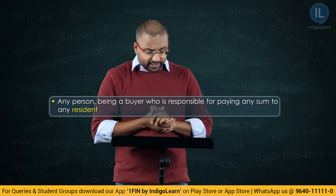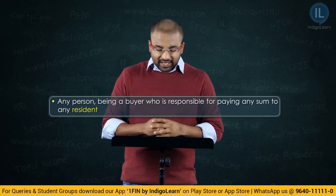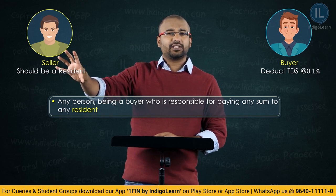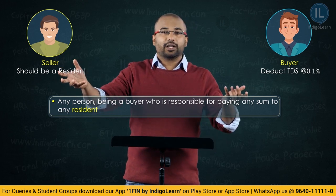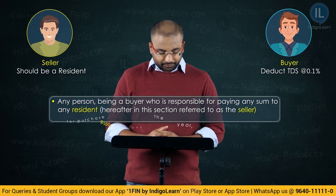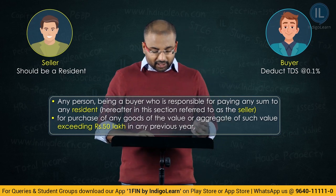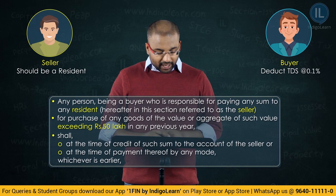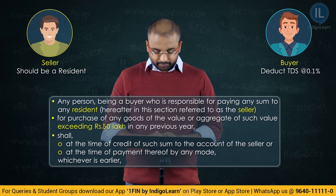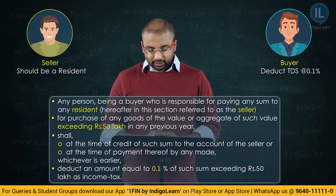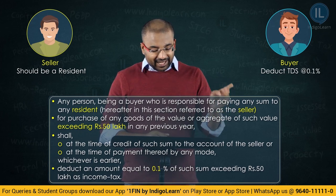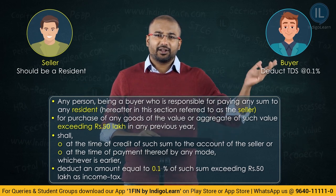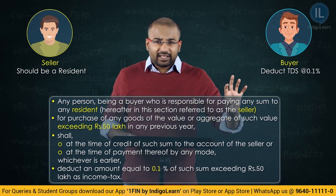Let's read Section 194Q. It says: any person being a buyer who is responsible for paying any sum to a resident — so your seller should be a resident; if the seller is a non-resident, Section 194Q will not apply — for purchase of any goods of the value or aggregate of such value exceeding 50 lakh rupees in any previous year, shall at the time of credit of such sum to the account of the seller or the time of payment thereof by any mode, whichever is earlier, deduct an amount equal to 0.1% of such sum exceeding 50 lakh rupees as income tax.